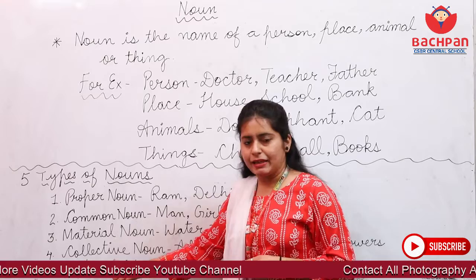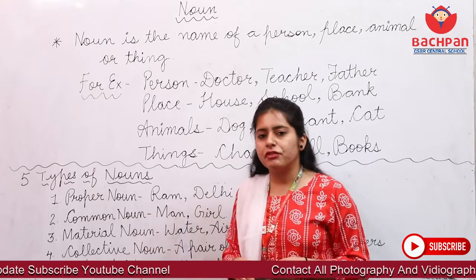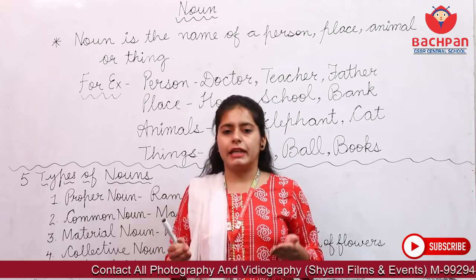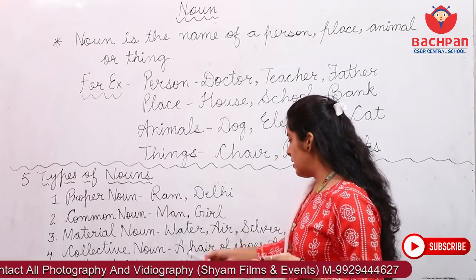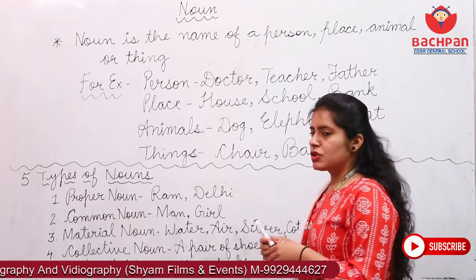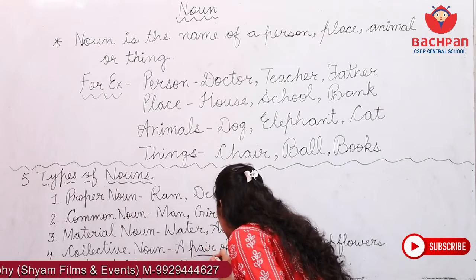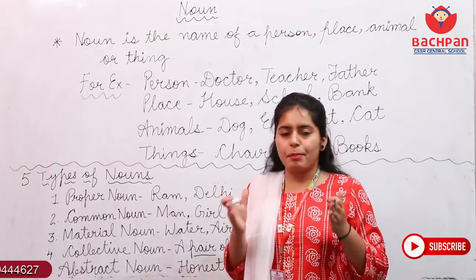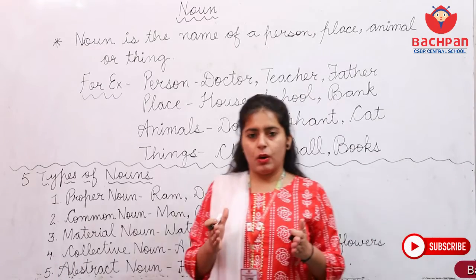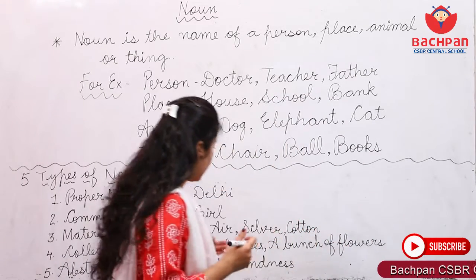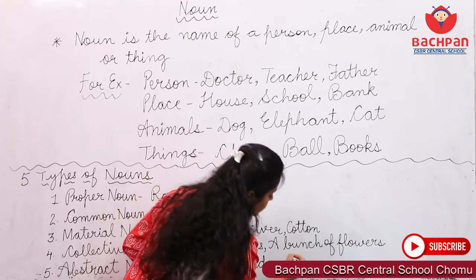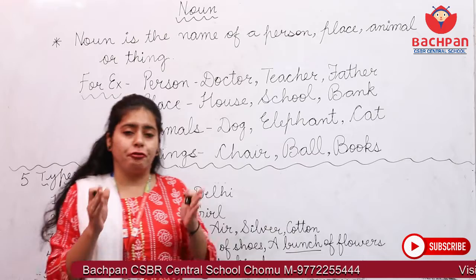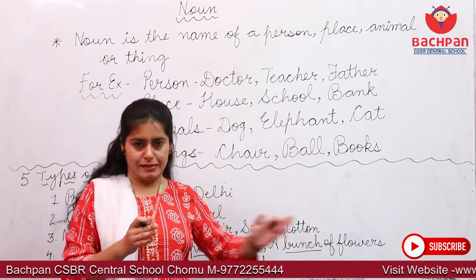Let's move on to the next, which is Collective Noun. What is Collective Noun? A group of words is called Collective Noun. For example, a pair of shoes — here the word 'pair' is the collective noun for shoes. Next is a bunch of flowers — the word 'bunch' is the collective noun for flowers.